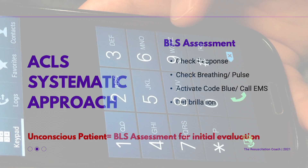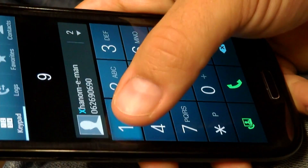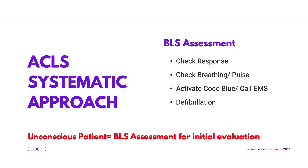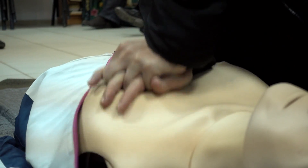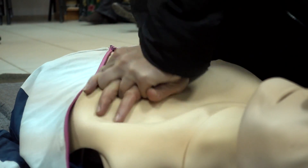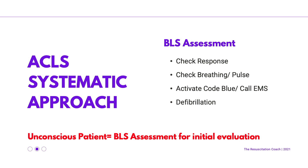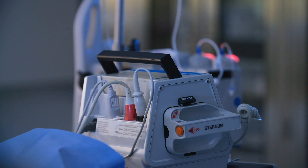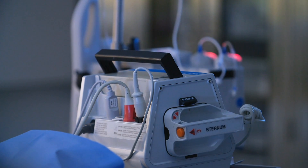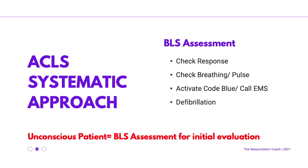Immediately start pushing hard and fast at a rate of 100 to 120 pushes per minute. Remember to allow full chest recoil. Don't interrupt CPR for longer than 10 seconds, and do not hyperventilate — you want to give just enough air to see visible chest rise. The moment your defibrillator or your AED arrives, immediately start making use of it.